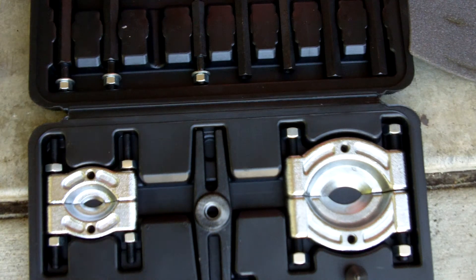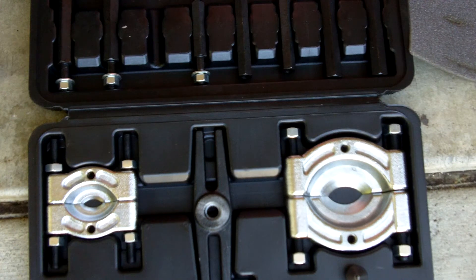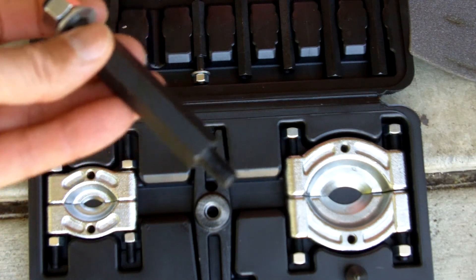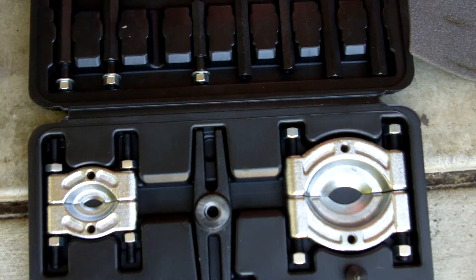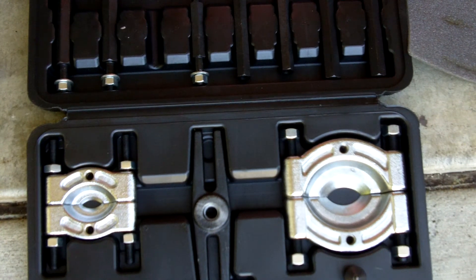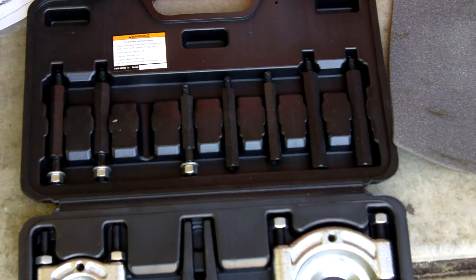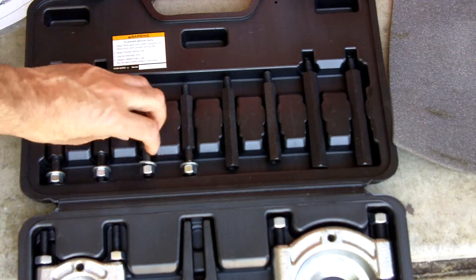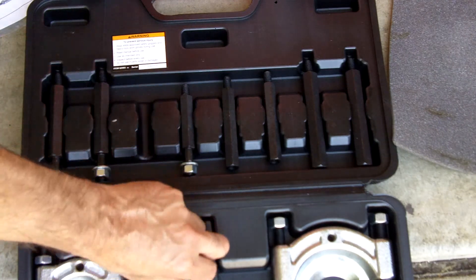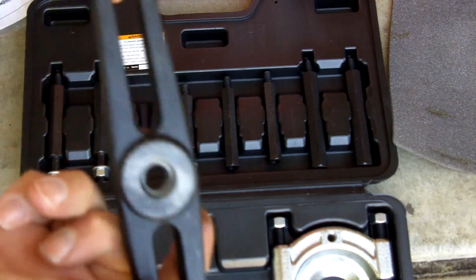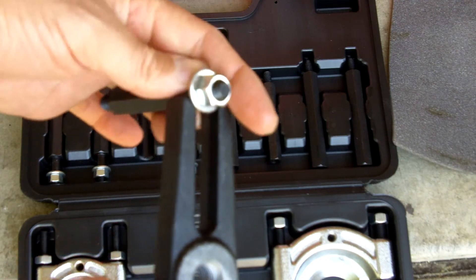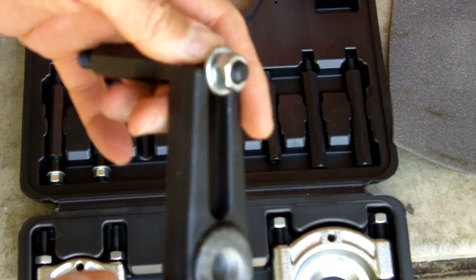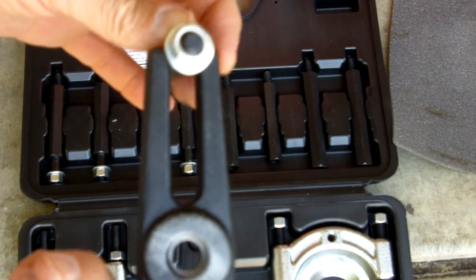So to be able to use these tools, which are 3/8 by 16, and get them to go into the Maddox, I had to make an adapter so that I could use these extensions that come with the kit. Because these extensions will fit onto this, like that, and the 5/8 won't.